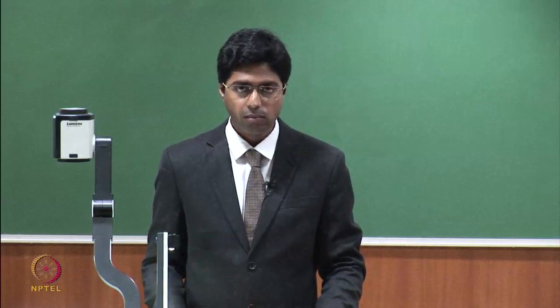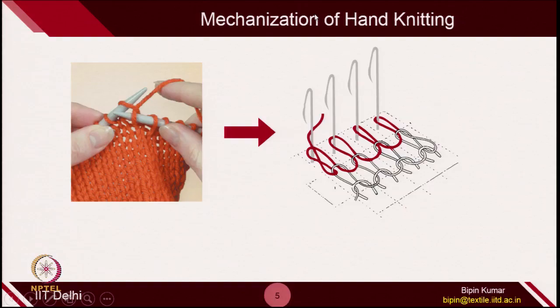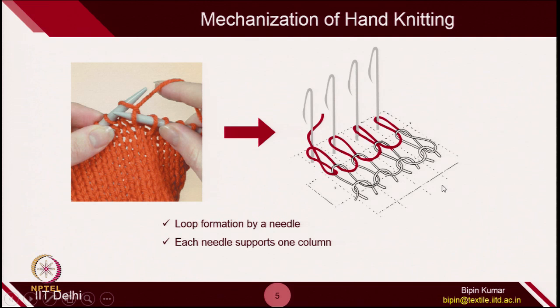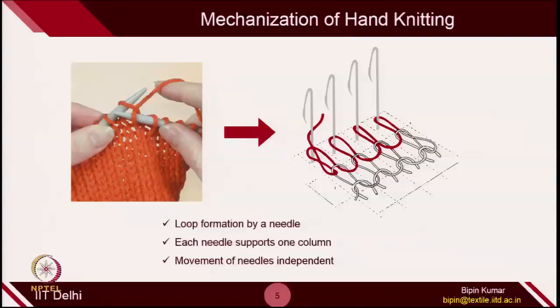To overcome these challenges, there is a need for mechanization — automation. How we can achieve this automation? Since each loop formation is highly independent, what we can do is control the loop formation in each column by a separate entity — and that entity is called a needle. Instead of controlling the fabric formation by 2 bars, we can have multiple needles for the number of columns in the fabric structure. Each needle will support each column — if you have 1000 needles, those needles support 1000 columns. In this way, we can achieve very high fabric width. Also, movements of needles are independent, so if we can control the movement of each needle precisely, there is less chance of tension variation, giving us a more uniform fabric structure.